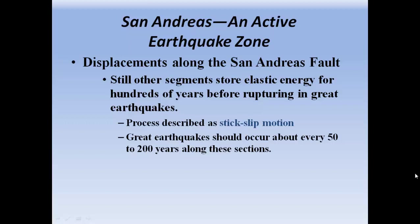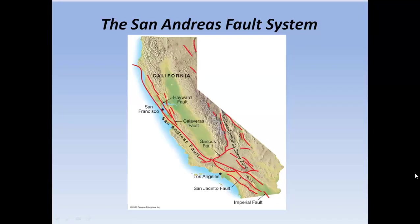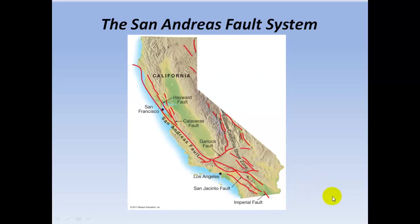Great earthquakes should occur every 50 to 200 years along these sections. Here's the San Andreas fault system — here's the main portion of the fault. Somewhere in Los Angeles, the Rose Bowl is actually built right on the San Andreas fault.